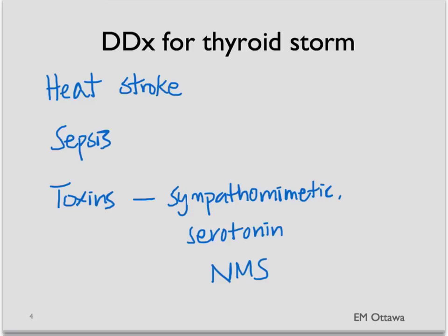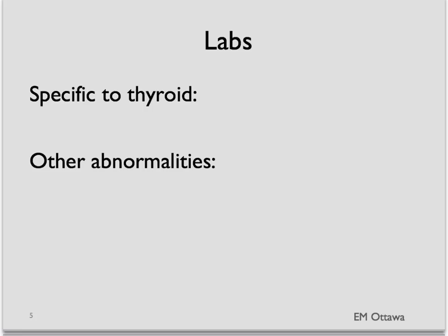If the history does not help you, sometimes laboratory studies might help us sort this out. Specific to the thyroid, if this is a thyroid storm or at least a hyperthyroid state, you would expect a high T3, high T4, and a low TSH.